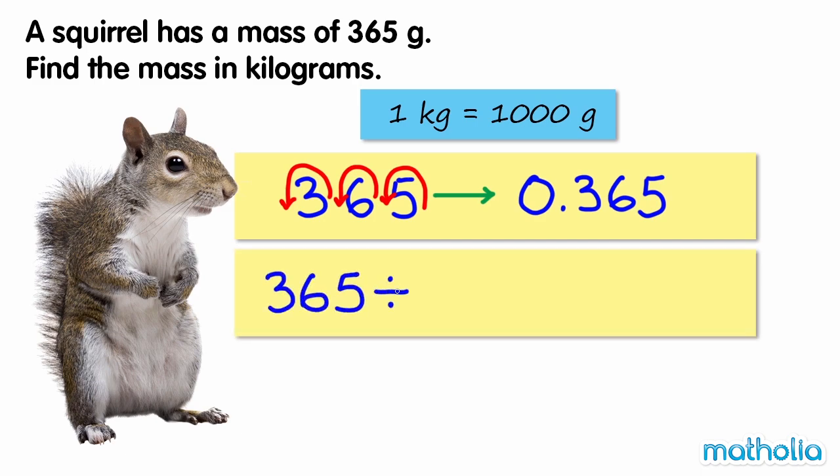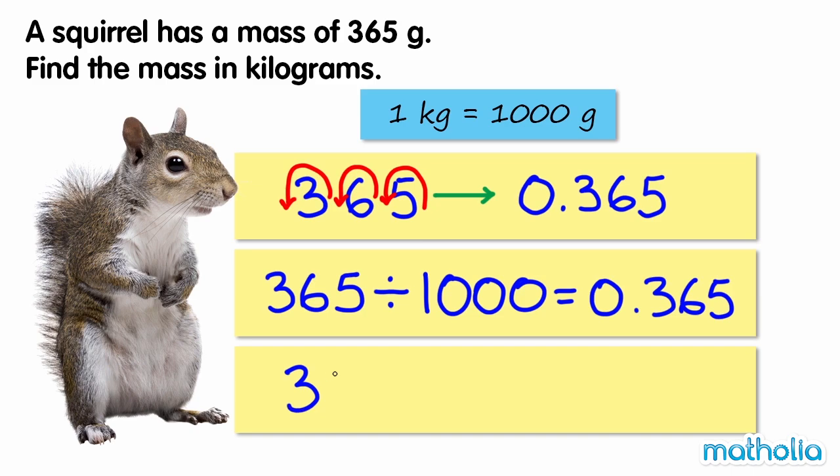365 divided by 1000 equals 0.365. So 365 grams equals 0.365 kilograms. The squirrel has a mass of 0.365 kilograms.